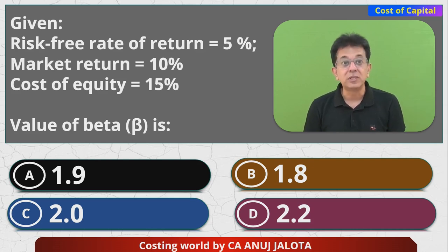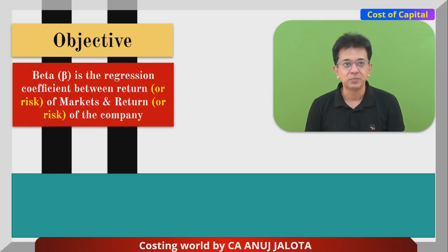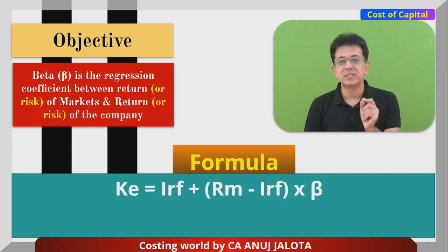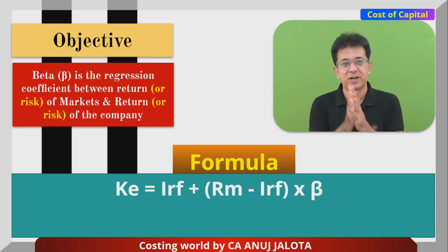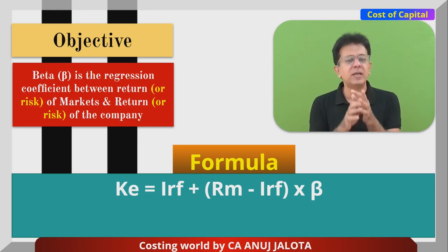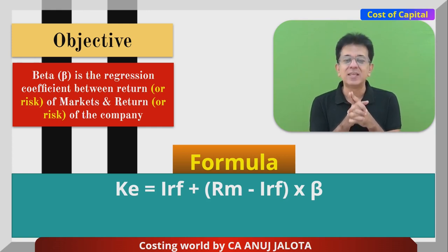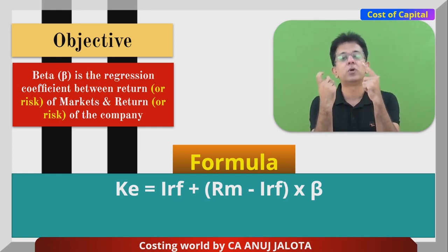First, let's look at the formula under the CAPM model. The CAPM formula is: KE = IRF + (RM − IRF) × Beta factor. Now, what is the beta factor that we have to find in this question? Beta factor is, in technical terms, the regression coefficient between the risk of the company and the risk of the market. Risk and returns are perfectly correlated.